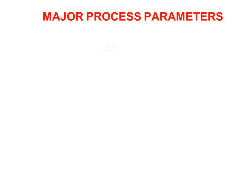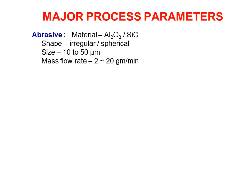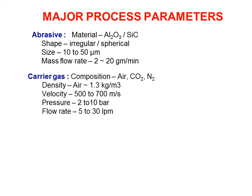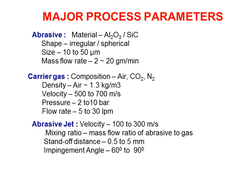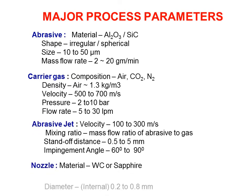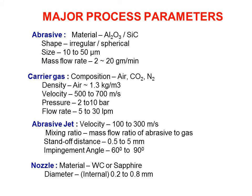The major process parameters involved in AJM are: abrasive parameters, carrier gas parameters, abrasive jet parameters, and nozzle parameters.